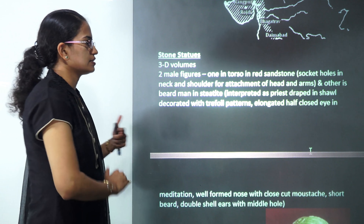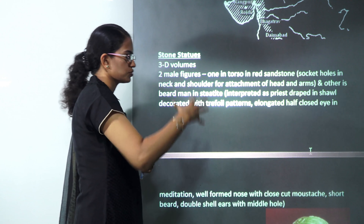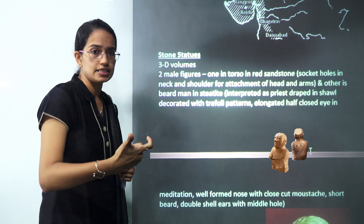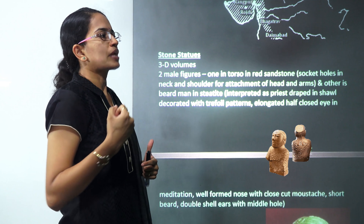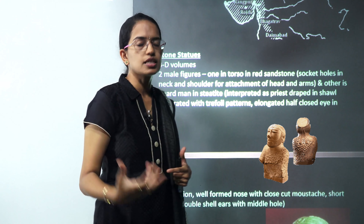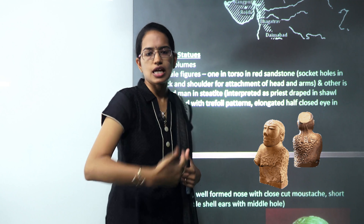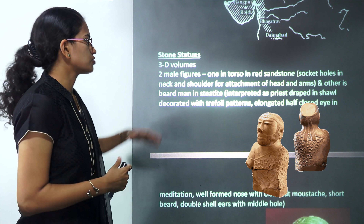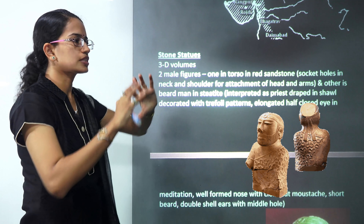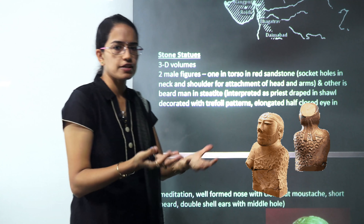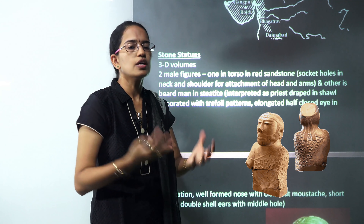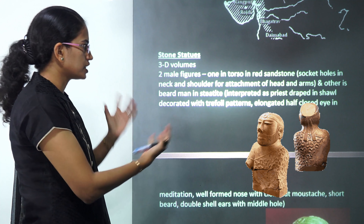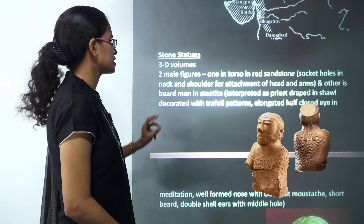Under Indus Valley civilization you would find stone statues, metal statues, and various seals. We will understand these one by one. The statues made from stone were three-dimensional, having a kind of 3D volume.